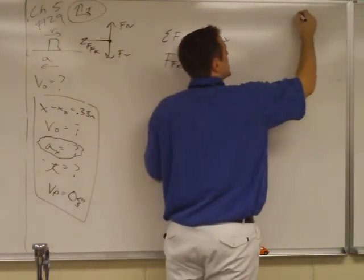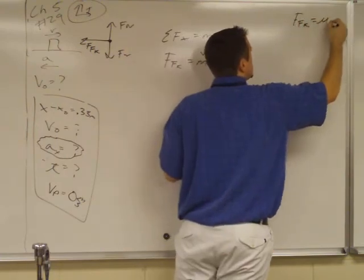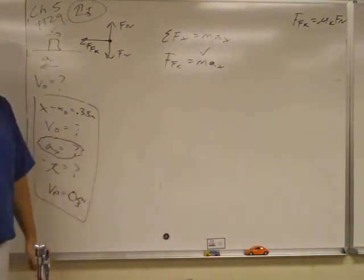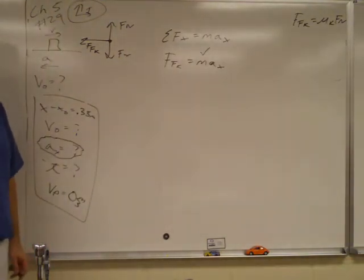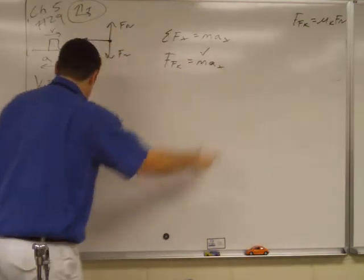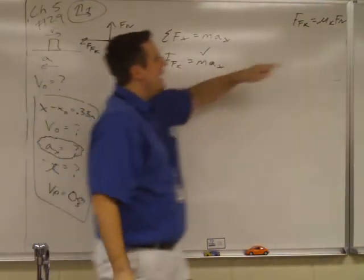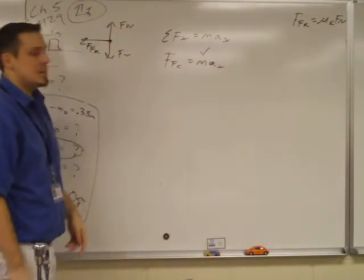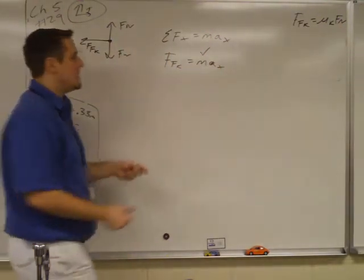So I'm going to write up here somewhere force of friction kinetic equals mu sub K times normal. Did they give us mu sub K in the problem? I hope so. Did they? Yes. So now to get friction so that I can get the acceleration so that I can plug it in over here, I need to get the normal force. How do I get the normal force? I sum the forces in the Y direction.